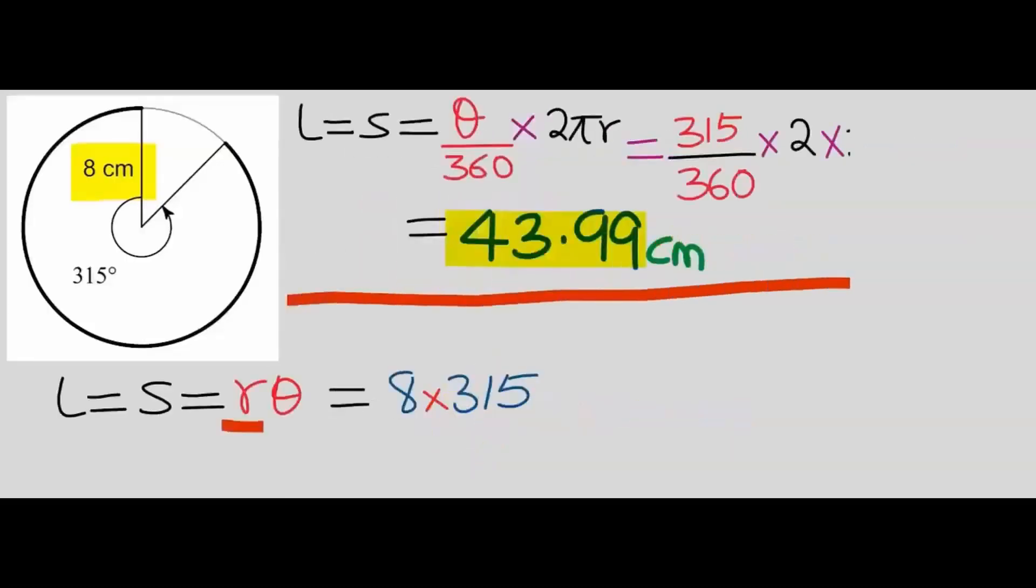Let's repeat the question using the radians formula. The radius is 8 and the angle is 315, but in this formula this angle is in radians.